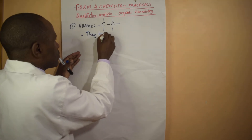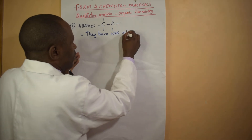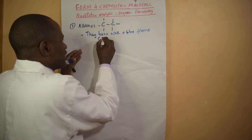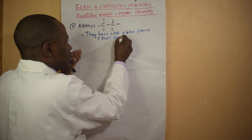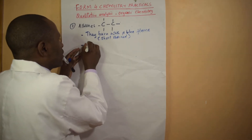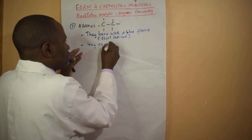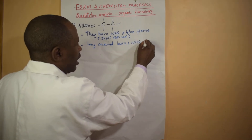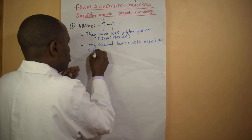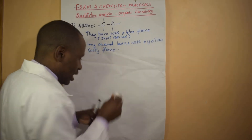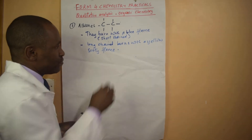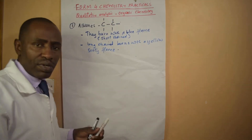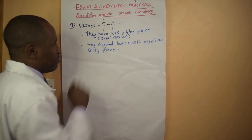The first property is that short-chain alkanes burn with a blue flame. However, long-chain alkanes burn with a yellow sooty flame. We explain this by the fact that when the carbon-to-hydrogen ratio increases, we may have incomplete combustion, which brings about the yellow sooty flame.